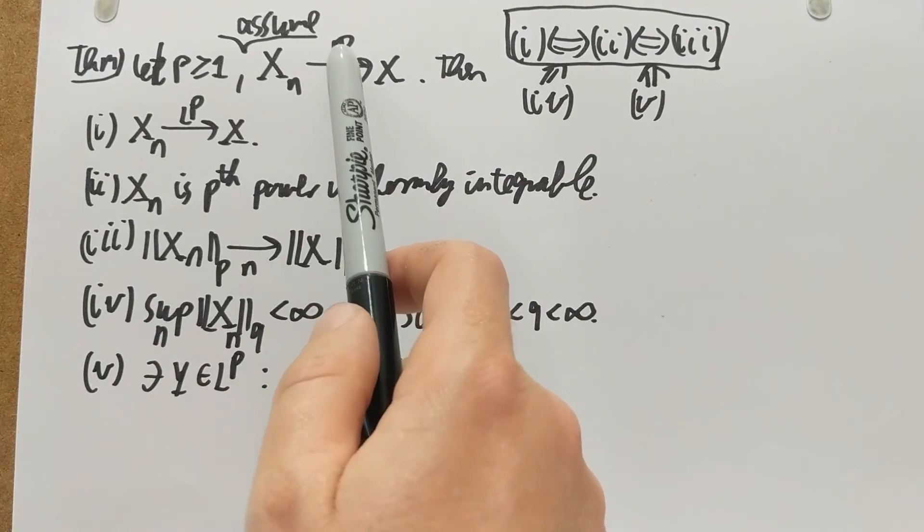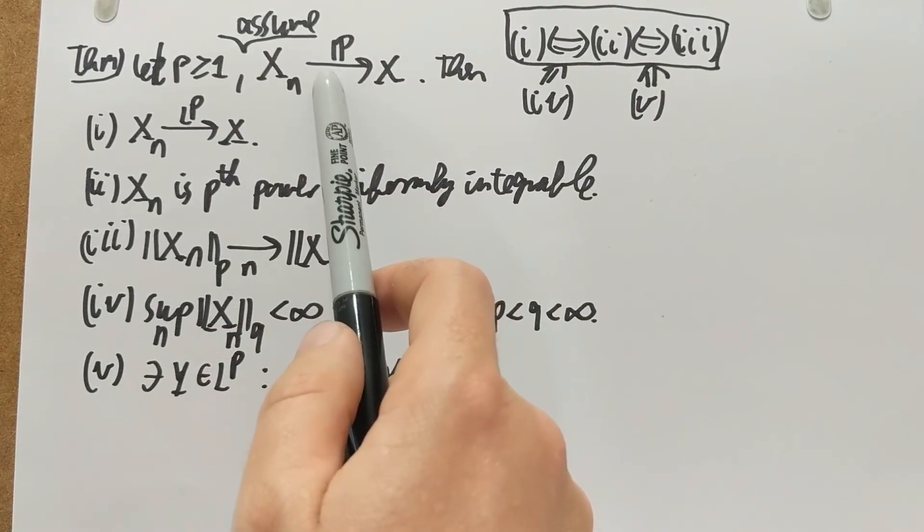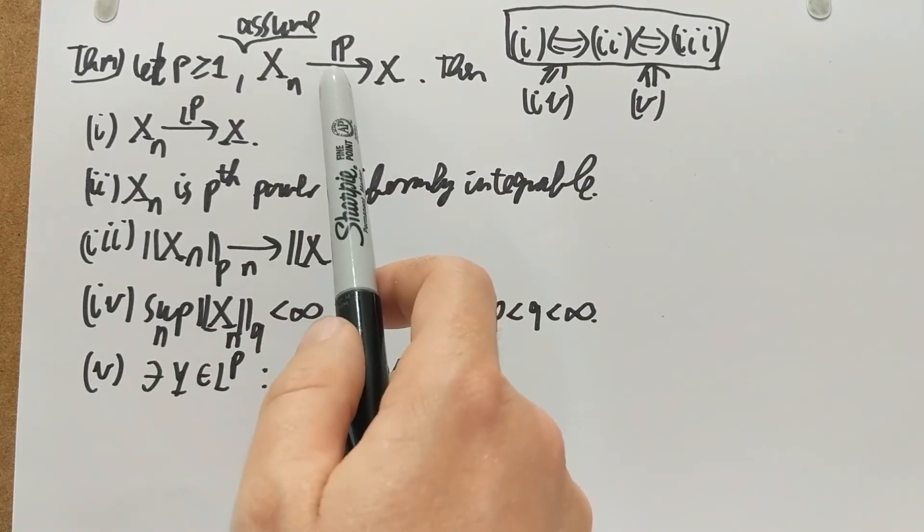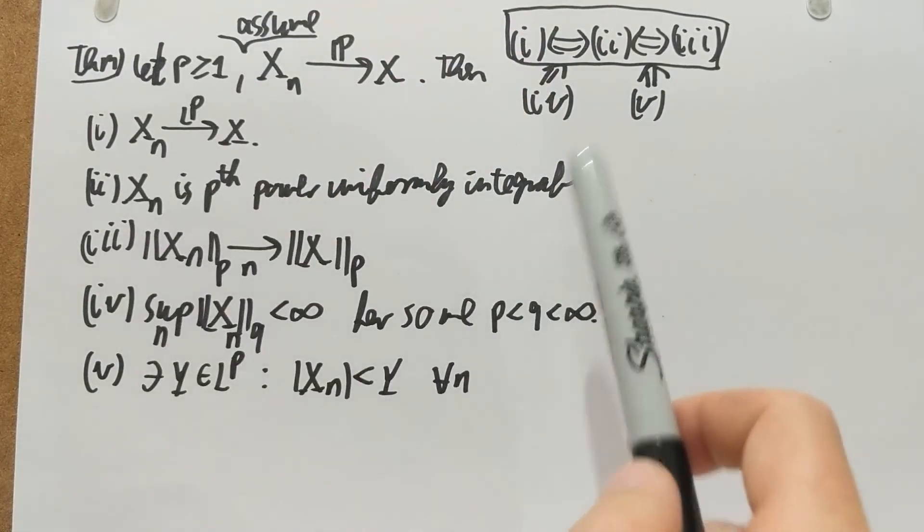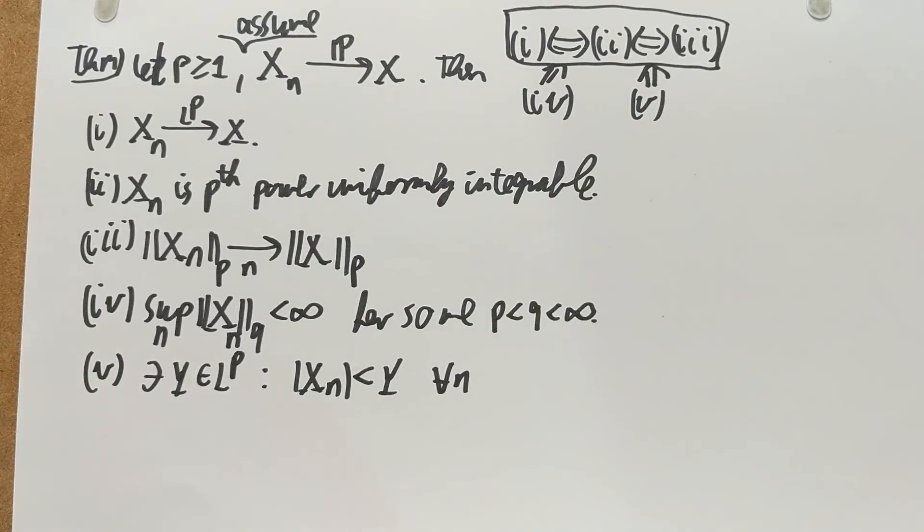Assume in probability convergence, we can conclude lp if, for example, we have uniform integrability. And that's probably the most often used way of the theorem.